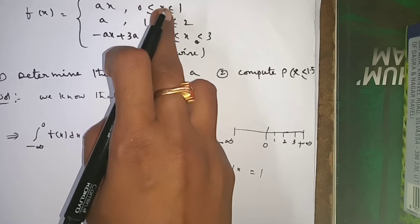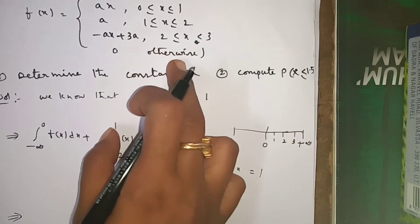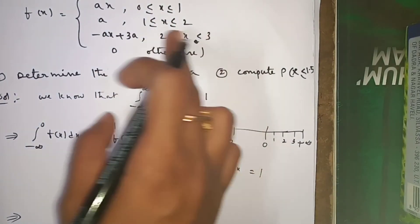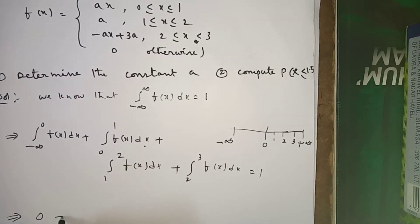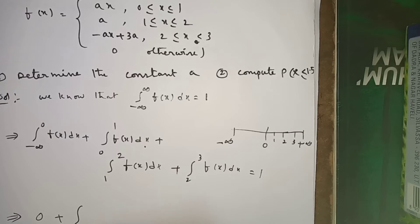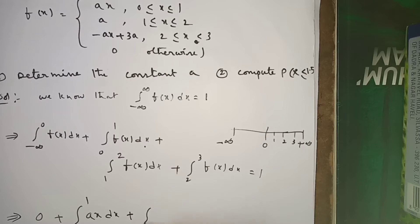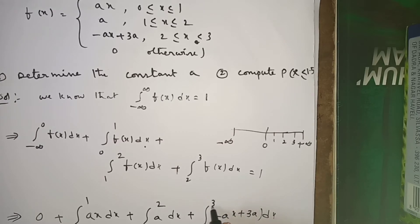In the remaining cases f(x) = 0, so the integrals from minus infinity to 0 and from 3 to infinity are zero. From 0 to 1, f(x) = ax. From 1 to 2, f(x) = a. From 2 to 3, f(x) = -ax + 3a. So we write: integral from 0 to 1 of ax dx, plus integral from 1 to 2 of a dx, plus integral from 2 to 3 of (-ax + 3a) dx, equals 1.